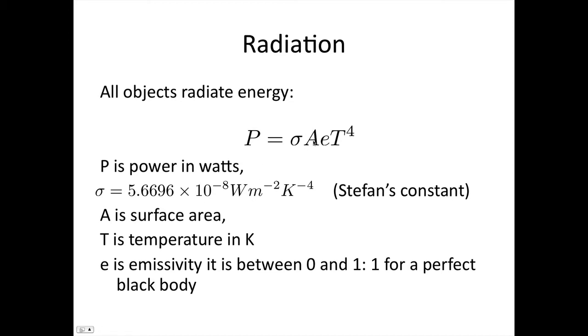A is the surface area of the body. ε is an emissivity constant which is different for different substances and is between 0 and 1.